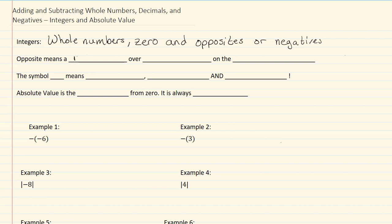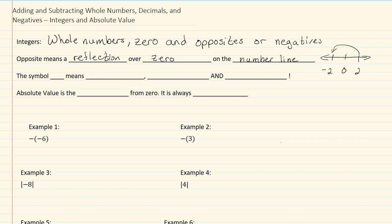Opposite means a reflection over zero on the number line. So we have our number line here. Here is zero. Here is two. The opposite of two is going to be a negative two. They are reflected over zero.